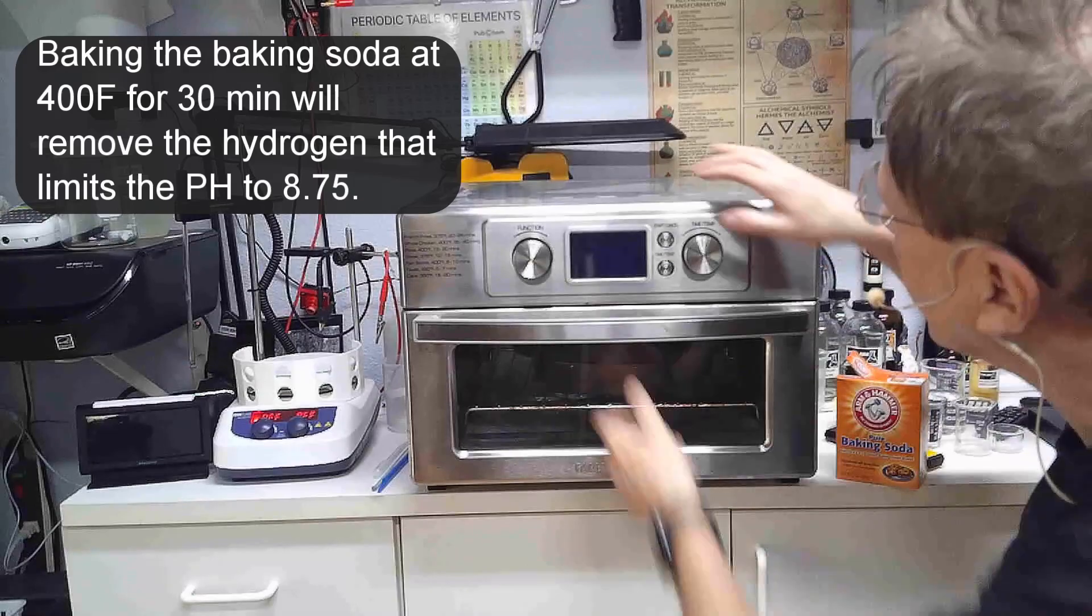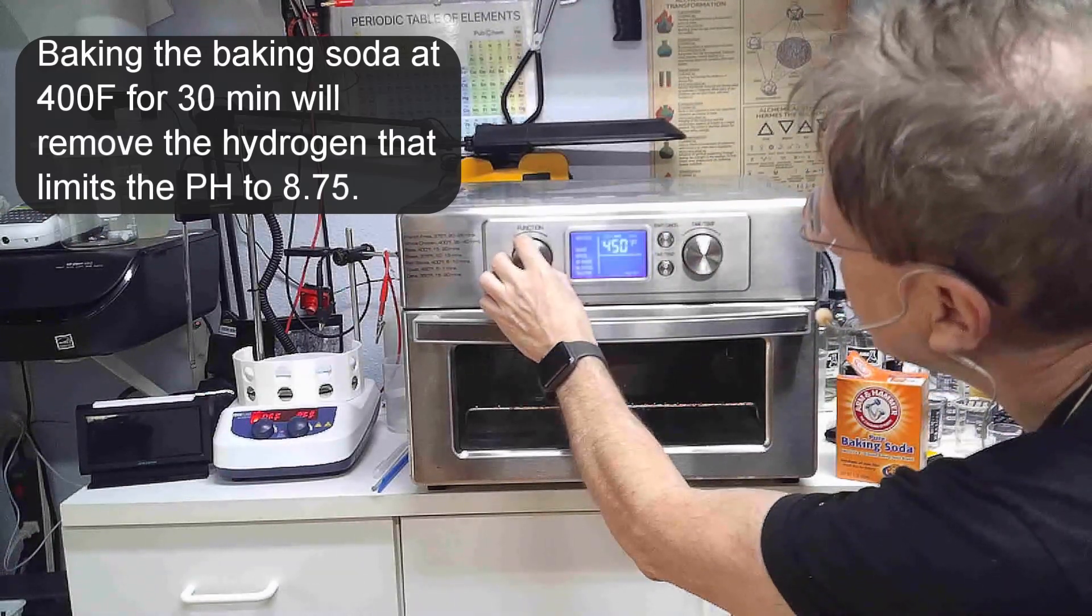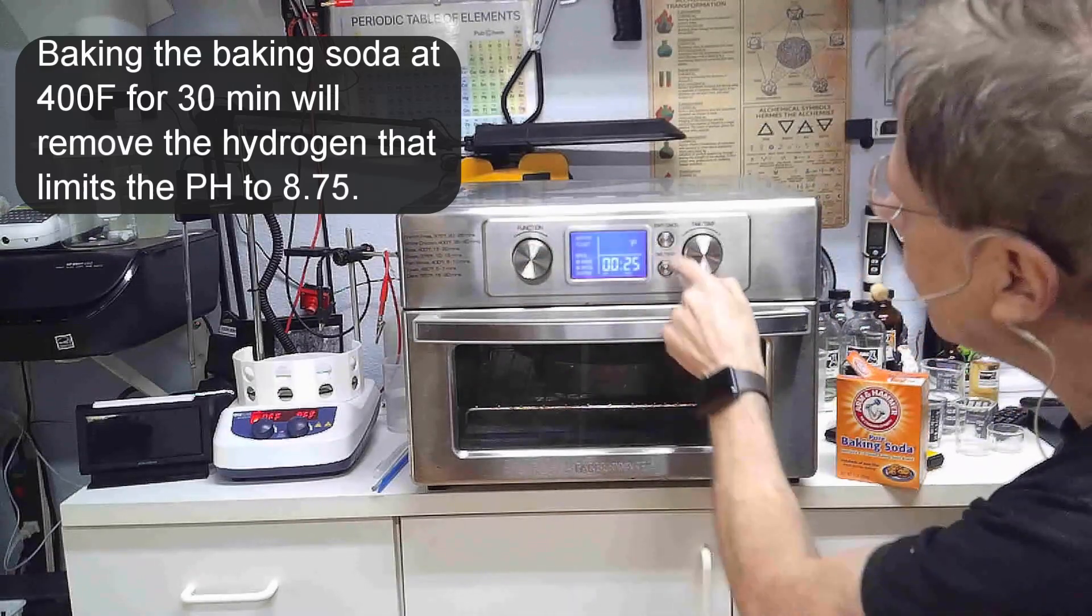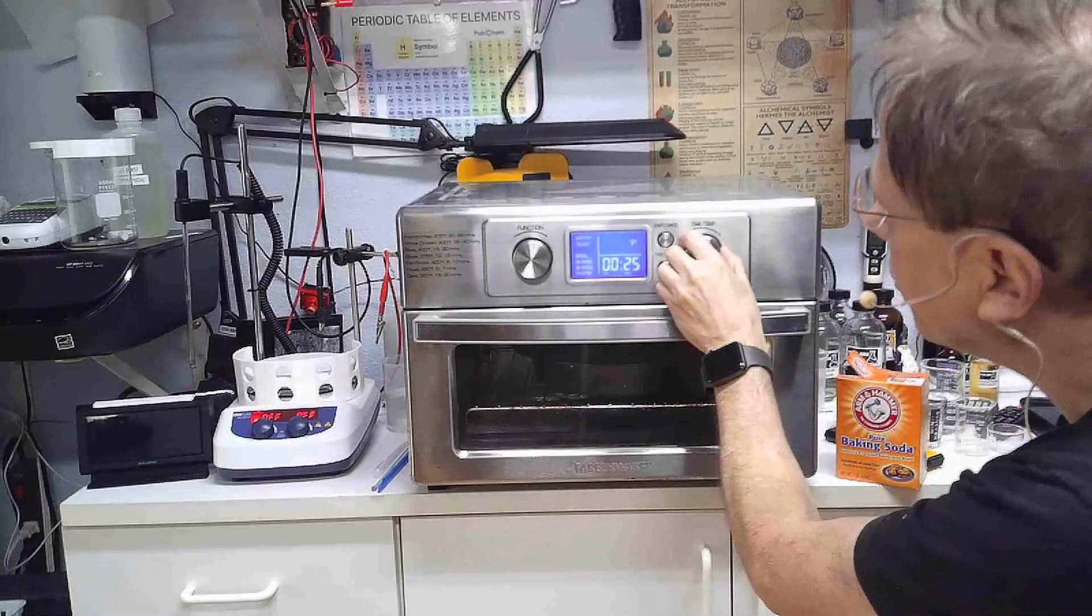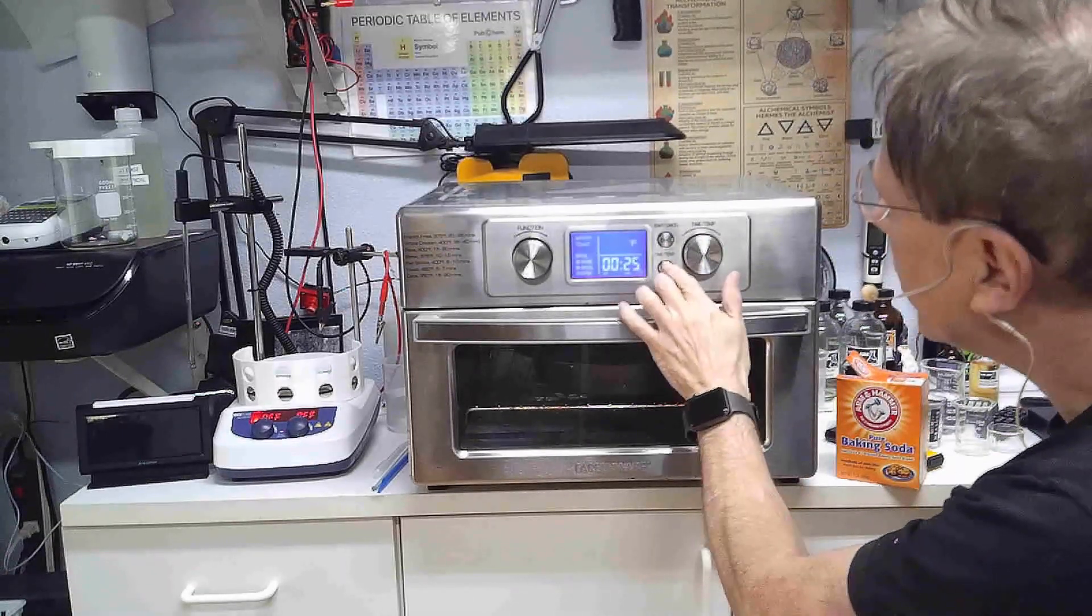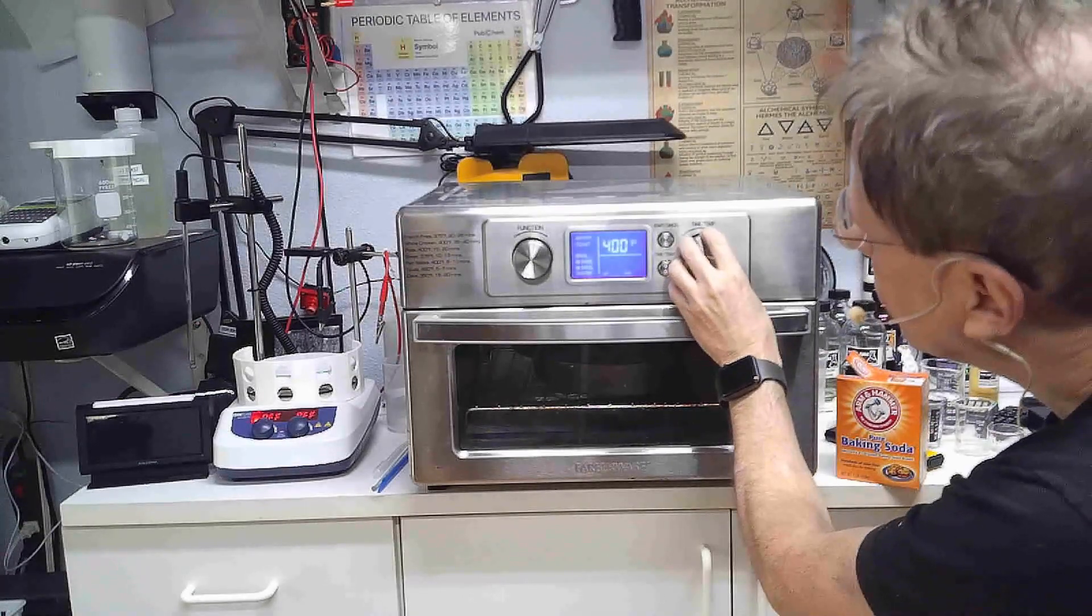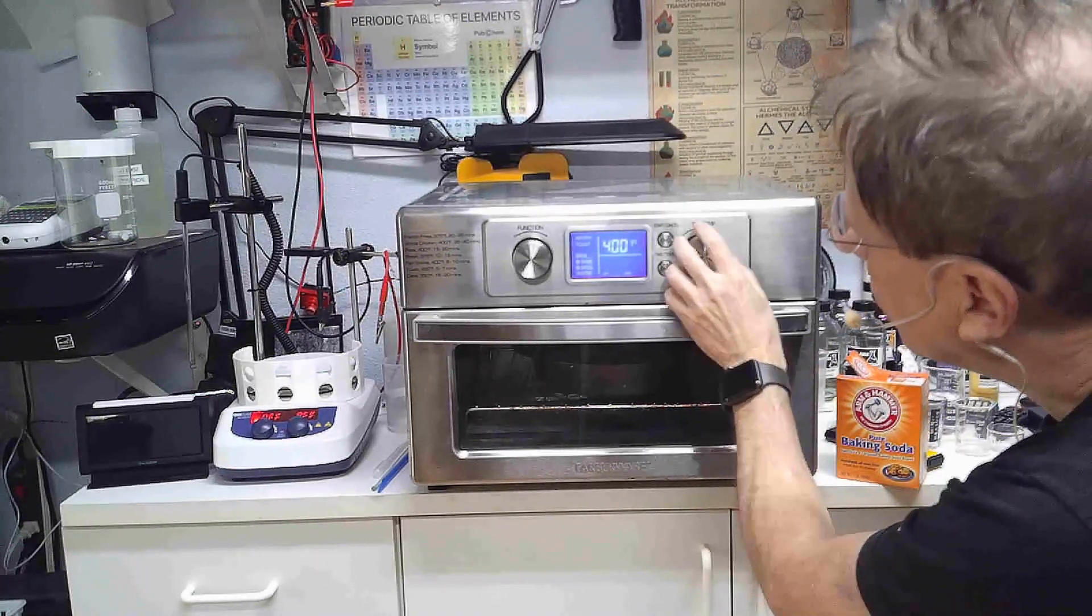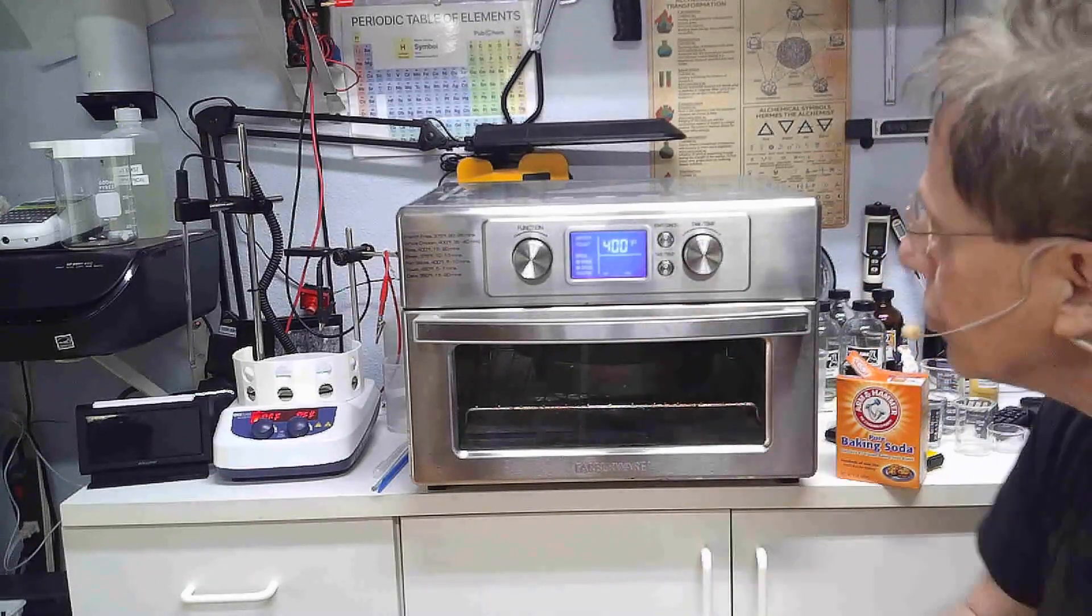And we're going to turn this thing on to bake, all right. And we're going to set the temperature to 400 degrees and we're going to set the time to 30 minutes and then we're going to press start.